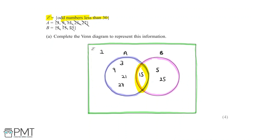3 is already in set A. 5 is already in set B. 7 is not included in A or B, so it falls outside the circles. 9 is in set A. 11 is not included in A or B, so it falls outside the circles. 13 also falls outside since it's not in A or B. 15 is in A and B. 17, 19 are not in set A or set B, so they fall outside the circles. 21 is in set A. 23 is not in set A or set B, so it falls outside. 25 is in set B. 27 is in set A. The final odd number less than 30 is 29, which isn't in set A nor set B, so 29 also falls outside the two circles.